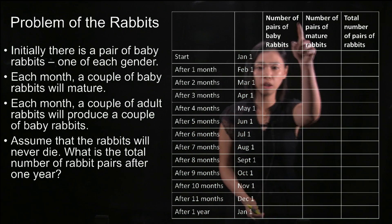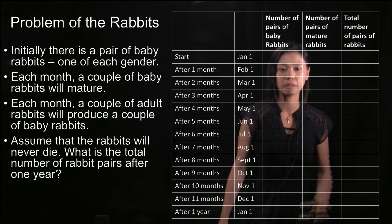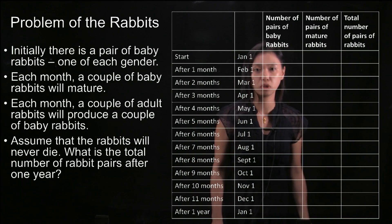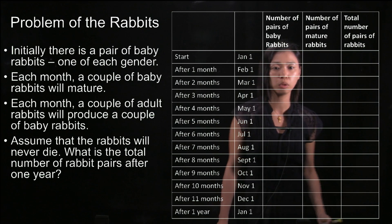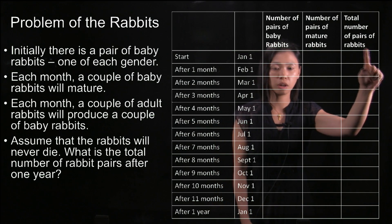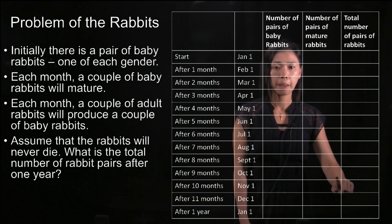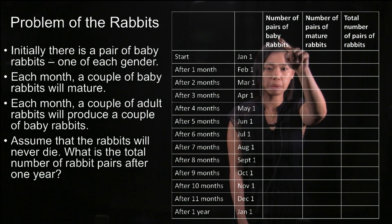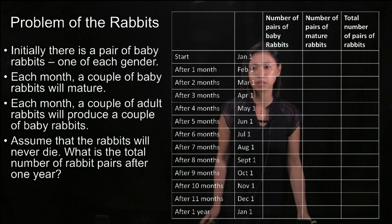In this column we will fill in the number of pairs of baby rabbits. This column will fill in the number of pairs of mature rabbits. And this column will fill in the total number of pairs of rabbits, meaning this column will be the sum of the other two — babies plus mature rabbits.